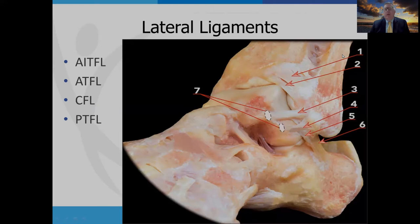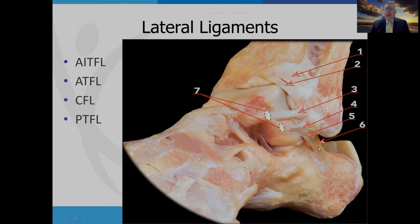Looking at the lateral ligaments — the anterior talofibular and the calcaneofibular — the calcaneofibular ligament crosses the subtalar joint. Not only does it stabilize the lateral ankle, but it also helps to stabilize the subtalar joint. So when the calcaneofibular ligament is implicated in ankle injury, it can have significant impact on not only the talocrural joint, but also the subtalar joint.